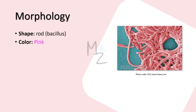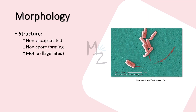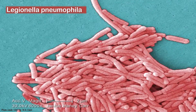Morphology: Legionella is a rod-shaped bacterium — a bacillus. It stains faintly with gram staining but does stain, which is why it appears red or pink colored. Legionella pneumophila is non-encapsulated, meaning it has no capsule around it. It does not form spores but is motile because it has a flagellum at one pole. Under the microscope it appears as a rod-shaped, pink-colored bacterium because it is gram-negative.